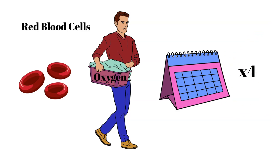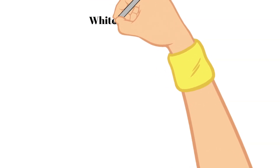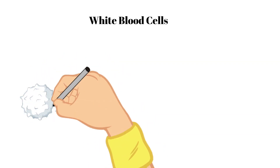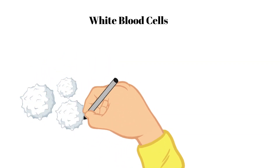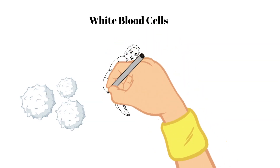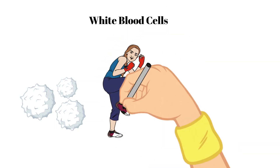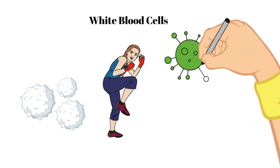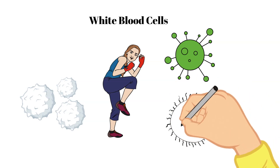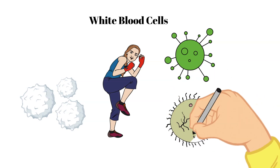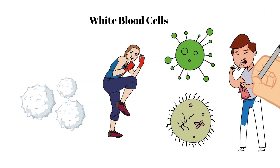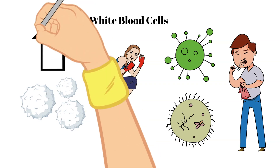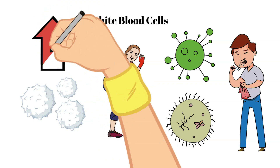Next are white blood cells. White blood cells help in the immune system. Different types of white blood cells fight germs such as bacteria and viruses, and others make antibodies — special proteins that recognize anything foreign and help the body get rid of it. Blood contains far fewer white blood cells than red blood cells, but when you are sick or have an infection your body can produce more white blood cells to fight this off.